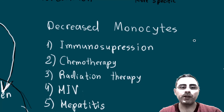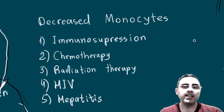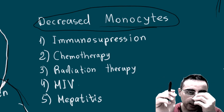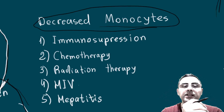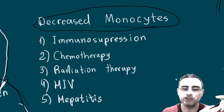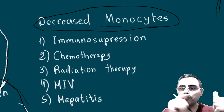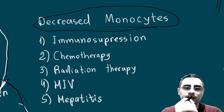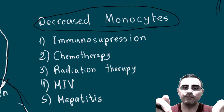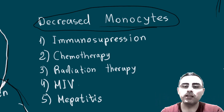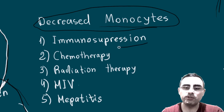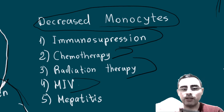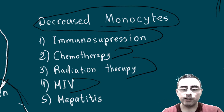Let's discuss when monocyte levels are decreased. This condition is quite rare, but it can occur when there is immune suppression — such as during chemotherapy, radiation therapy, HIV infection, or hepatitis — when the immune system is seriously suppressed. The most common causes are immunosuppression from chemotherapy and radiation therapy, and in some cases untreated HIV and hepatitis.